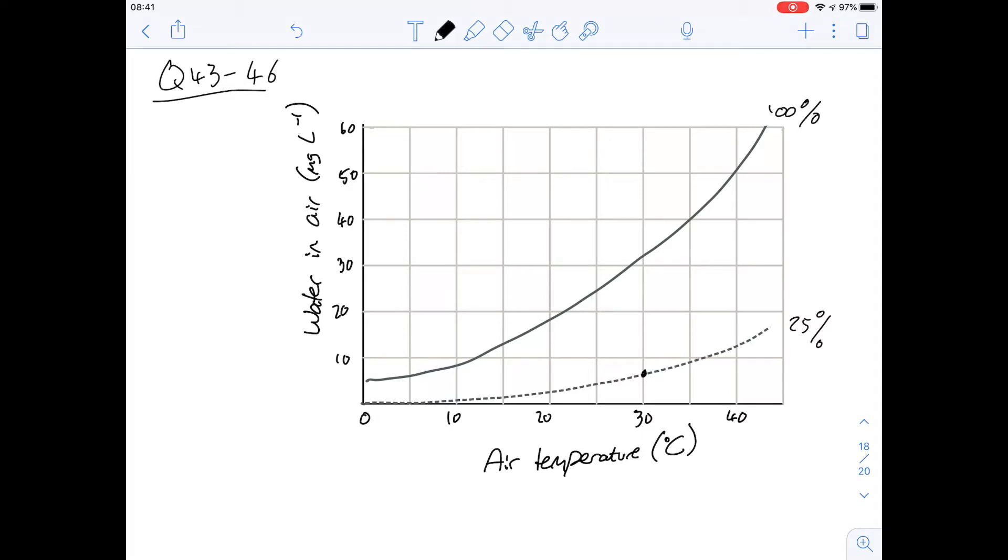Question 43 says: Consider a human with a body temperature of 37°C inhaling air of 25°C with 25% relative humidity. Which of the following is closest to the mass of the water added to each liter of air as it becomes saturated and equilibrates to body temperature?